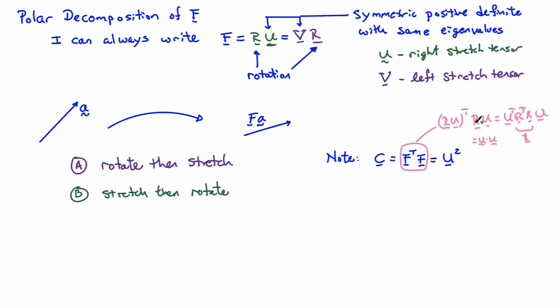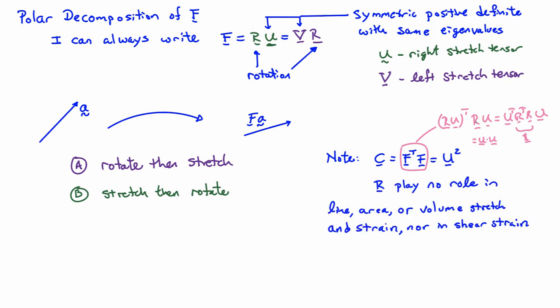So if you look at this, it tells you that really everything we care about has to do with the stretching tensor and has nothing to do with the rotation. In particular, R plays no role in line, area, or volume stretch and strain, nor does it play a role in shear strain. Really, all the information we care about is contained in C, or equivalently in U, the right stretch tensor.